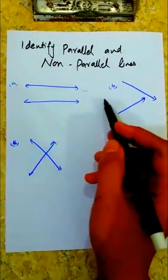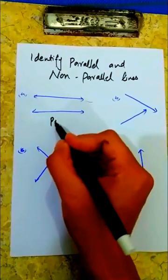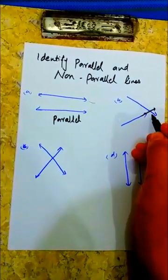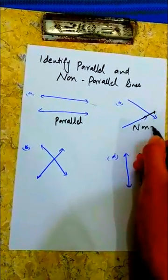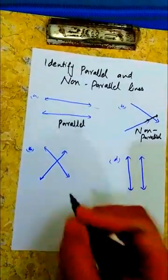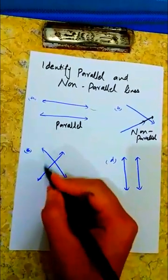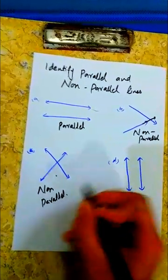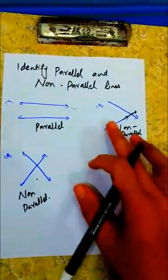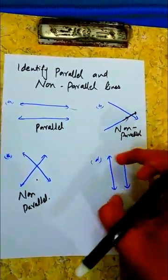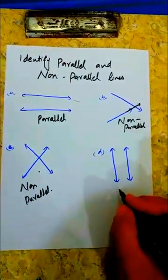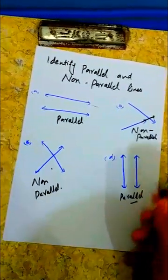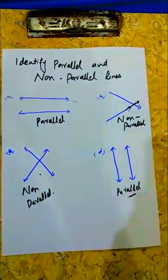So what are parallel lines? Parallel lines are parallel. Non-parallel lines will intersect a little bit — they are not parallel, so they cut across each other. The parallel lines do not cut, while the non-parallel lines do cut.